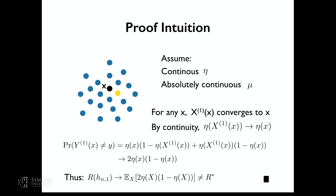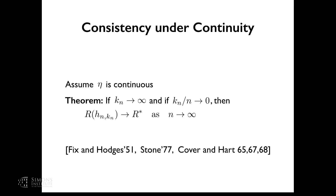What about growing k? One can show a similar universal consistency result: if eta is continuous, kn goes to infinity, and kn/n goes to zero, then the risk of the k-nearest neighbor classifier converges to the risk of the Bayes optimal as n goes to infinity. This was established in a long sequence of results by Fix and Hodges (1951), Stone, and Cover and Hart, across various metric spaces.